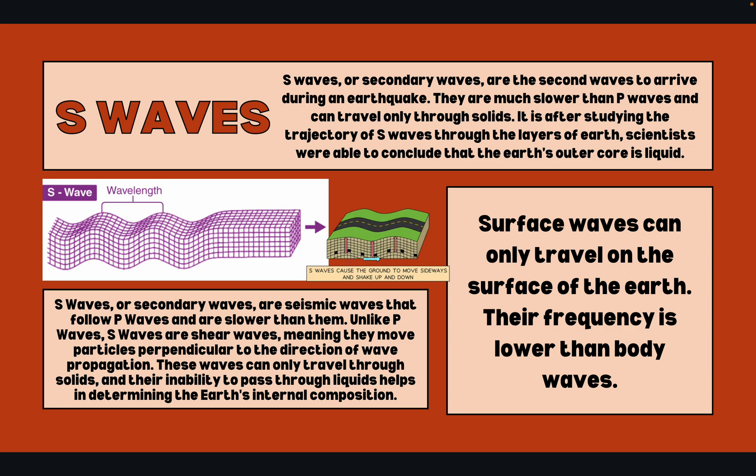S waves, or secondary waves, are the second waves to arrive during an earthquake. They are much slower than P waves and can travel only through solids. By studying the trajectory of S waves through the layers of the Earth, scientists were able to conclude that Earth's outer core is liquid.